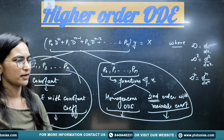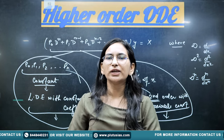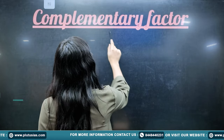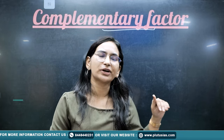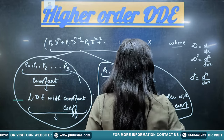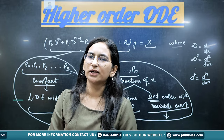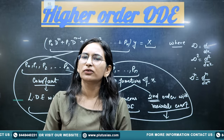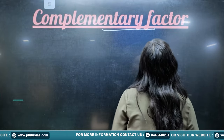For any higher order differential equation with constant coefficients, we have to find out two parts. One is known as the complementary factor — this is the complementary factor — and it is the solution of only the left-hand side, with the right-hand side set equal to zero. For finding out the solution for the right-hand part, you have the particular integral.